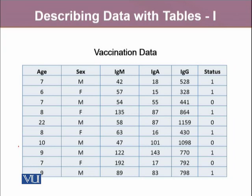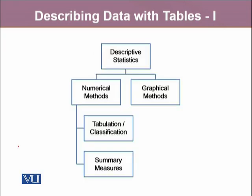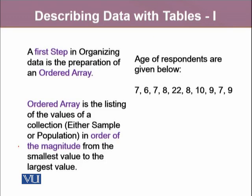All these variables, when it comes to describing the data, we treat them differently. When we have to describe our data, there are some numerical methods as well as graphical methods. In numerical methods, we will organize our data in the form of tables, and there are different summary measures. We will be looking at tabulation and classification methods in this module, and graphical methods and summary measures will proceed after.